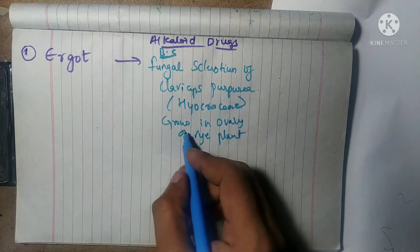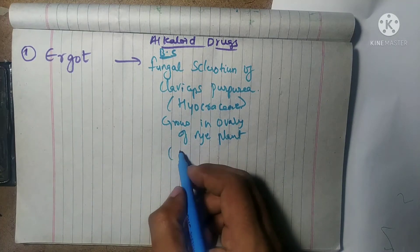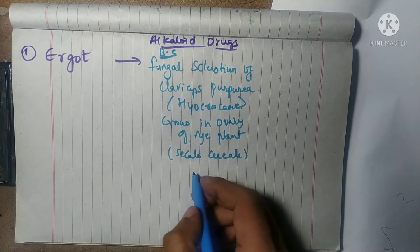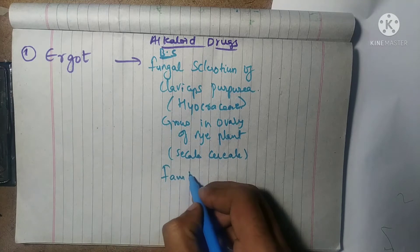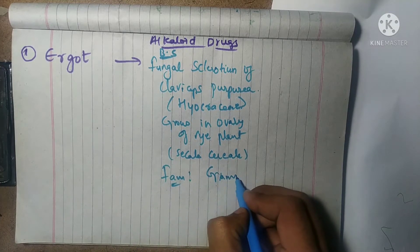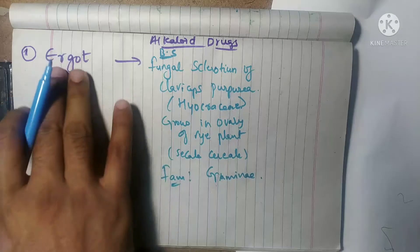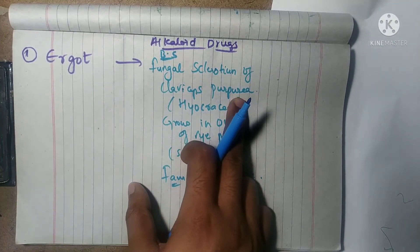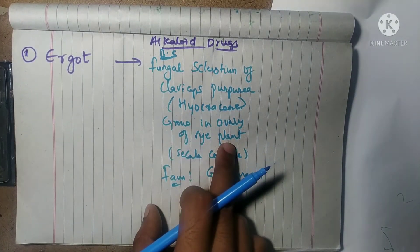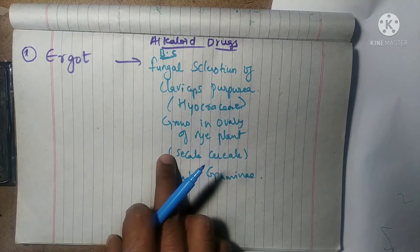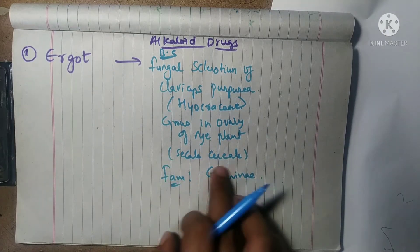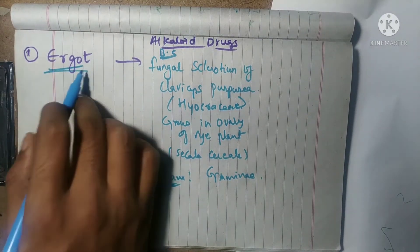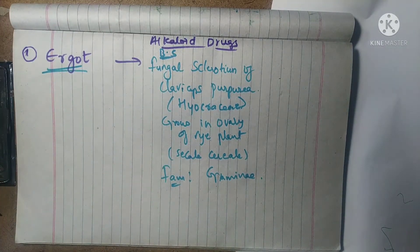The rye plant is called Secale cereale and belongs to the family Graminae. So the ergot is obtained from the fungal sclerotium of Claviceps purpurea, which grows in the ovary of the rye plant, Secale cereale, belonging to the family Graminae. So these are the biological sources of ergot.